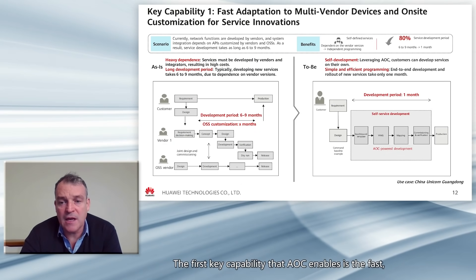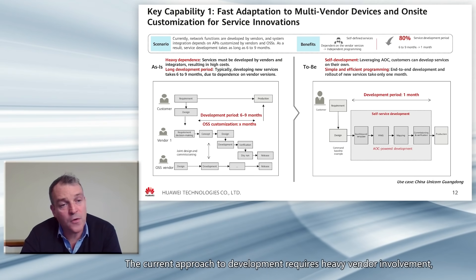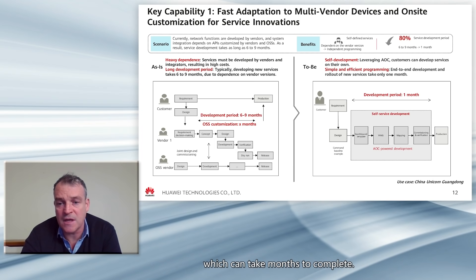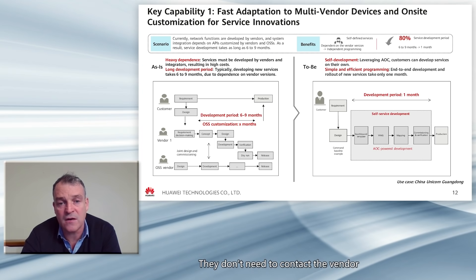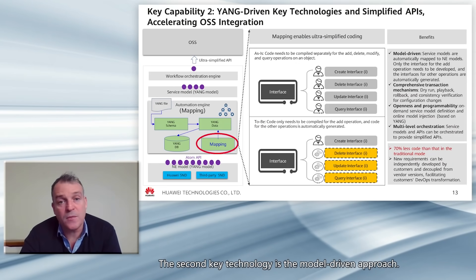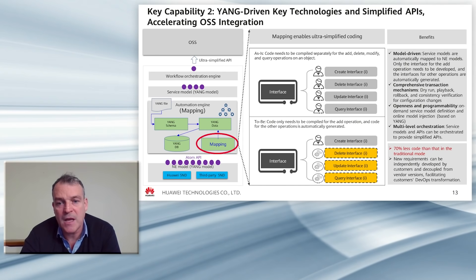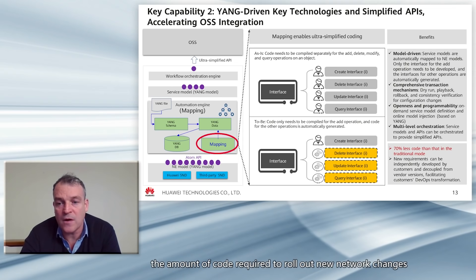The first key capability that AOC enables is the fast on-site creation and customization of networks and network services. The current approach to development requires heavy vendor involvement, which can take months to complete. AOC enables operators to develop their own automation on-site, reducing time to less than a month. They can develop these things themselves without needing to contact the vendor, using the published models. The second key technology is the model-driven approach. Together with automated API generation, this greatly simplifies network and service creation. The templated approach to configuration change, along with the EasyMap merge technology, greatly reduces the amount of code required to roll out new network changes — 70% less in our estimation.